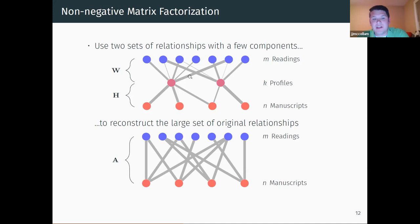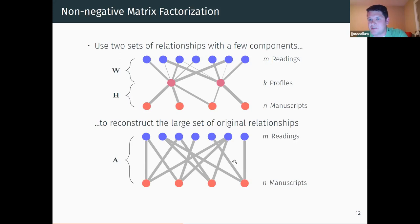When you multiply those two matrices together, you end up with a set of relationships going directly from readings to manuscripts — a total weight of contribution accumulated through profiles and then spread out to manuscripts. It's like a weighted combination of weighted combinations. In your original matrix you have zeros and ones for where those relationships occur, but in the product of these two matrices it won't be quite the same — you want to approximate it as closely as you possibly can.